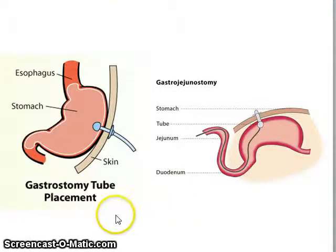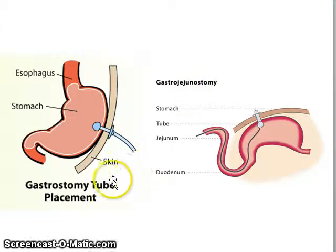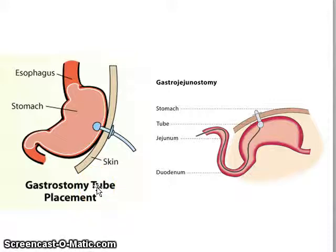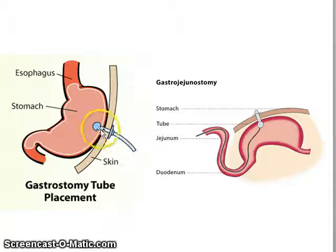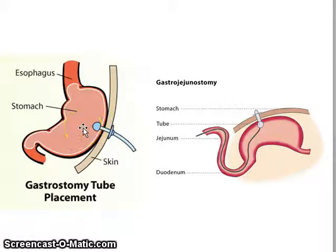A couple more interventional procedures are the gastrostomy tube and the gastrojejunostomy tube. These are percutaneous procedures done under local anesthetic — the needle is punctured right through the skin into the stomach. Sometimes a balloon is inflated to keep it in place, creating a feeding tube. These are sometimes placed for decompression or drainage, but most of the time they are for nutritional supplementation.